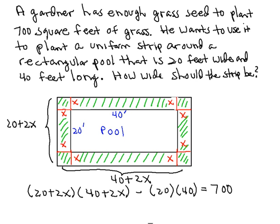and that will give us the area of the strip around the pool where the grass seed will be planted, and we know that area is 700 square feet. So that will be our equation, and next we'll solve the equation.